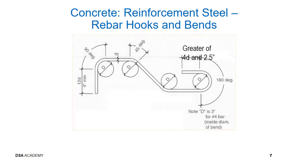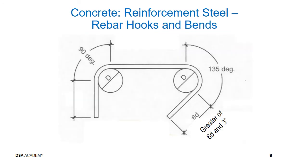The typical standard hook extensions at the free ends of a bar are illustrated on this slide. Note the extension is a function of the degree of the bend. The stirrup and tie hook extensions at the free ends of a bar are shown on this slide. Note the differences between the different hooks.